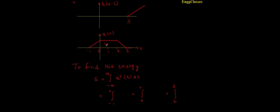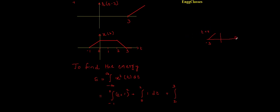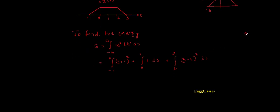From minus one to zero the signal is t+1, so x²(t) is (t+1)². From zero to two the signal is one, so x²(t) is one. From two to three, by shifting and flipping, the signal is 3-t, so x²(t) is (3-t)². These three integrals give the total energy.